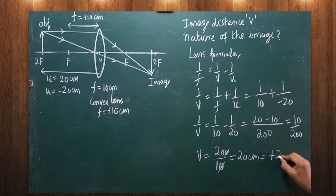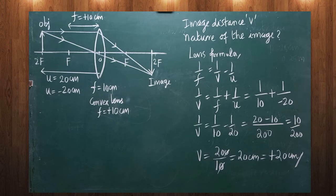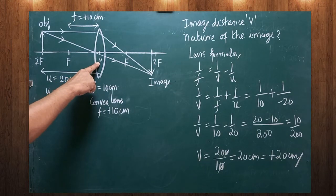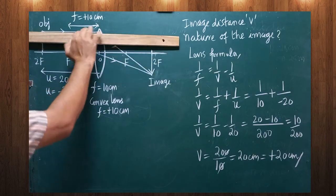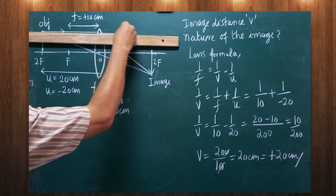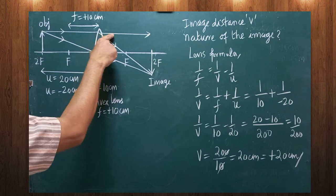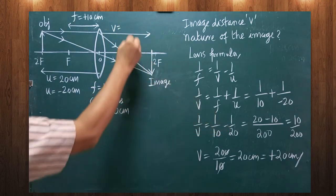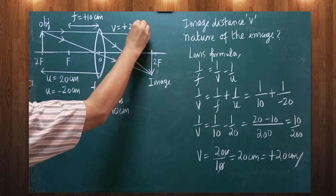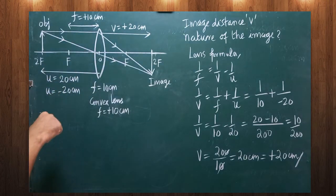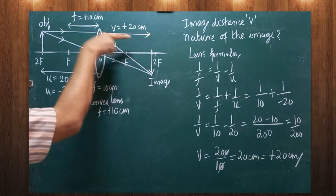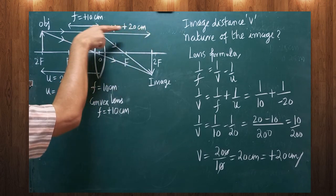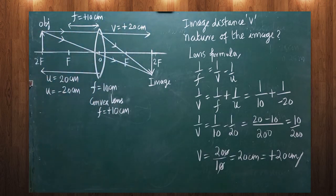The value of v is obtained as positive 20 centimeters. The image distance is the distance between the optic center and the image. Since this distance is measured from the center of the lens along the direction of the ray, v is taken as positive. Therefore, v equals plus 20 centimeters.